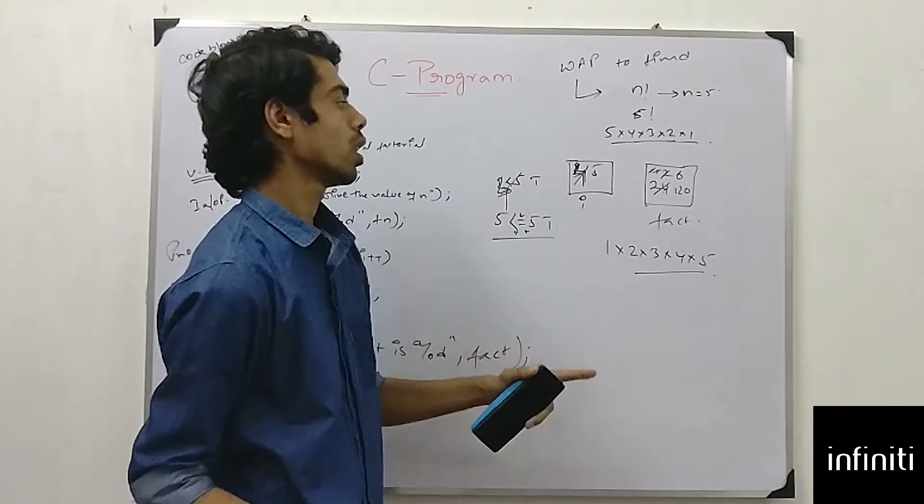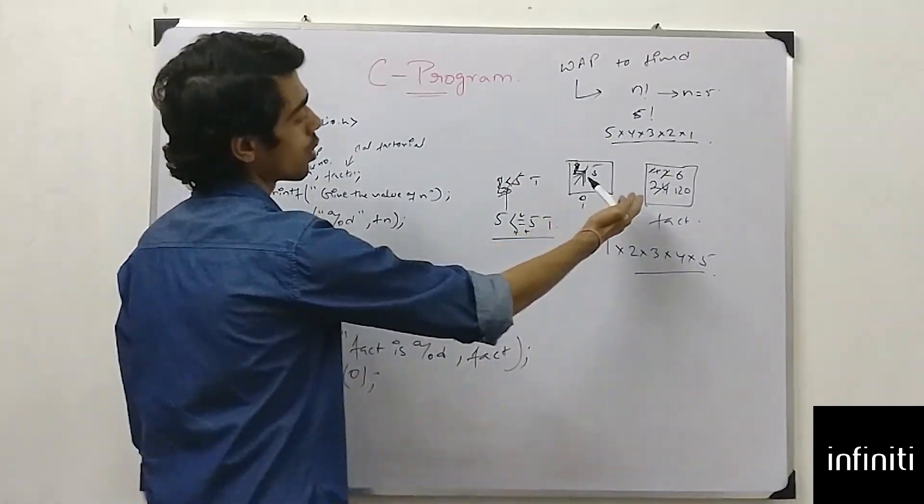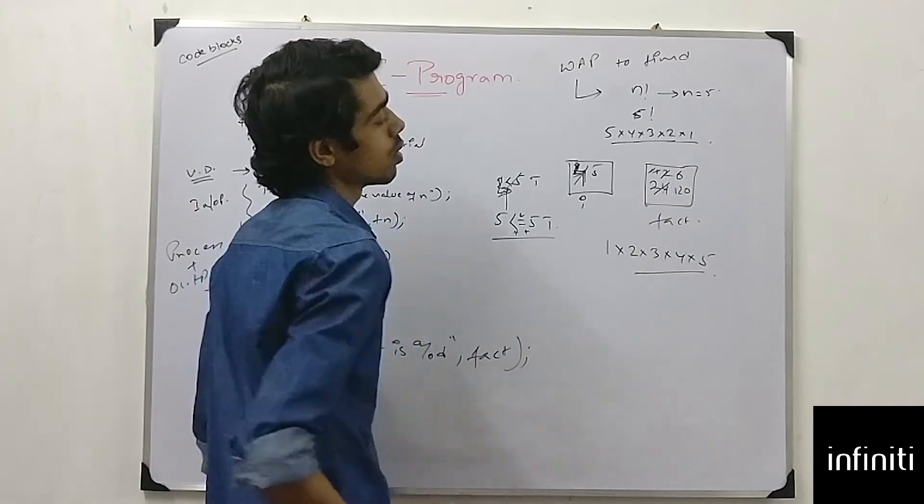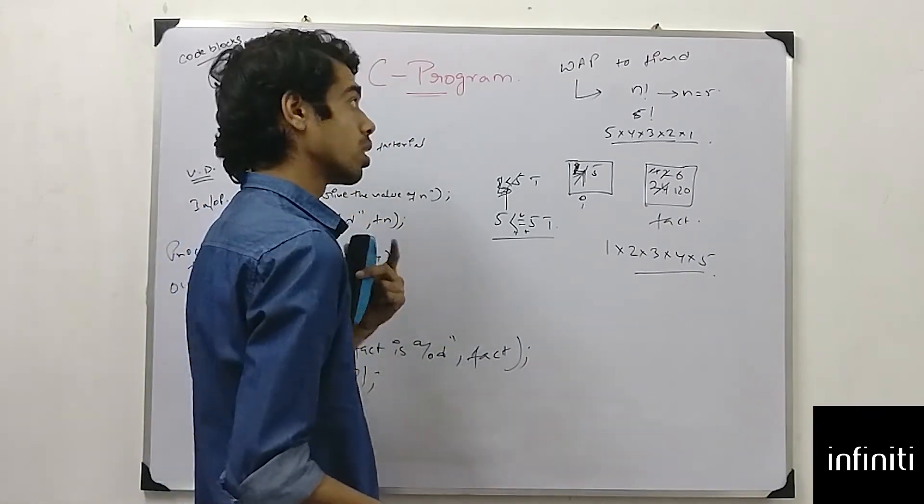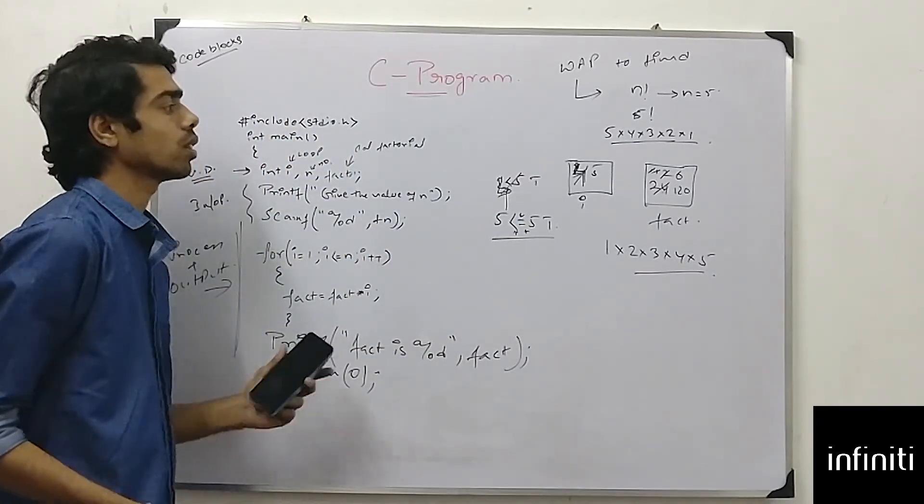If I take n is equal to 10, it will do same. But when i is equal to 6, it will again calculate for 120 into 6, which is 700 something. And so and so forth. So this is the way to calculate the factorial.